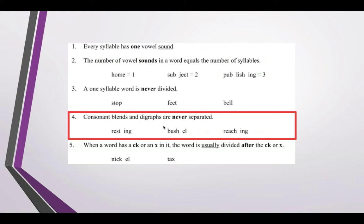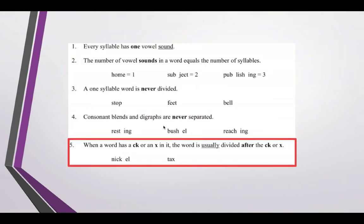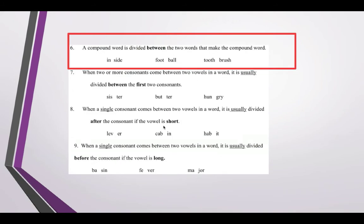Consonant blends and digraphs are never separated. The NG in 'resting' goes together. In 'bushel,' the SH goes with the BU. In 'reaching,' the CH goes with the EA in 'reach.' If you have a CK or an X, you're usually dividing after that CK or X. So in 'nickel,' you divide after the CK. 'Tax' is a one-syllable word. A compound word is divided between the two words — like 'inside' is divided after 'in' and before 'side.'